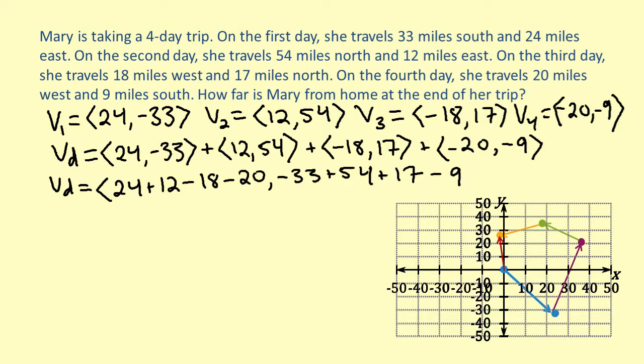Now we can do the addition in each component to find our displacement vector. So we get that vd equals -2, 29. So, from the start of the trip to the end of the trip, Mary's displacement vector is -2, 29.